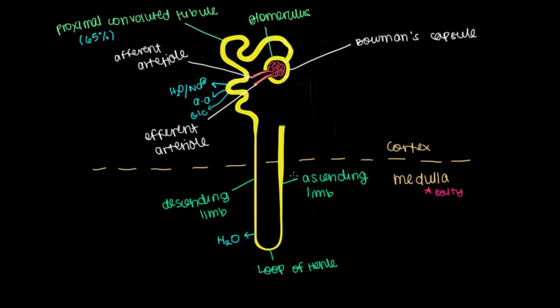On the other hand, the ascending limb does the exact opposite. Here we reabsorb things like sodium, chloride, potassium. And in fact, this part is impermeable to water. No water will be reabsorbed here in the ascending limb.